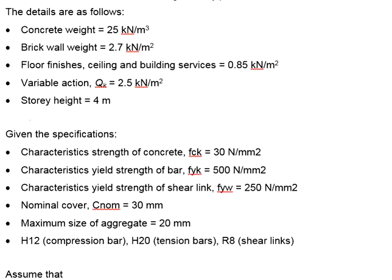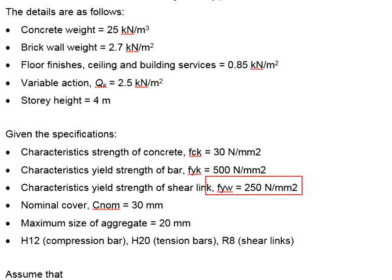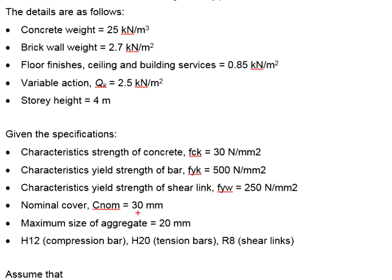The general specifications: the concrete strength is 30 N/mm². Fyk is 500 N/mm². The characteristic yield strength of the shear link is 250 N/mm². Nominal cover is 30 mm. Aggregate size is 20 mm.